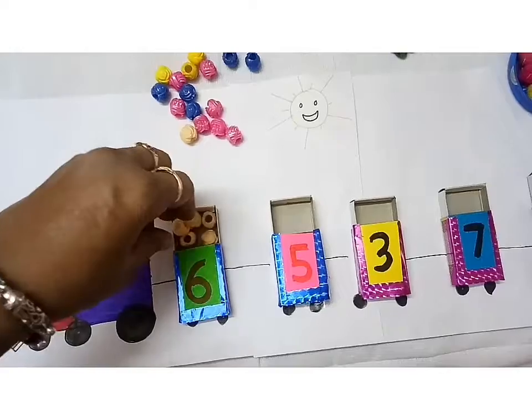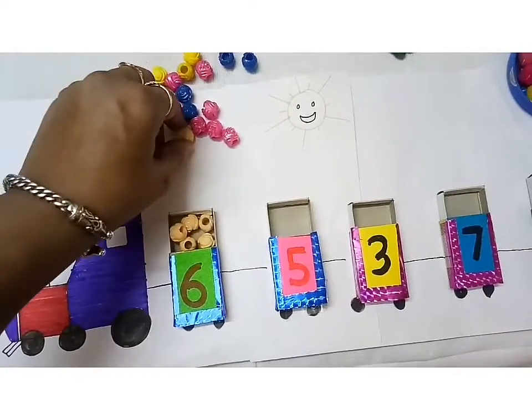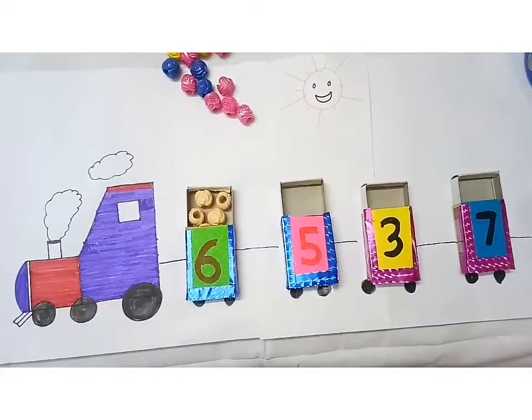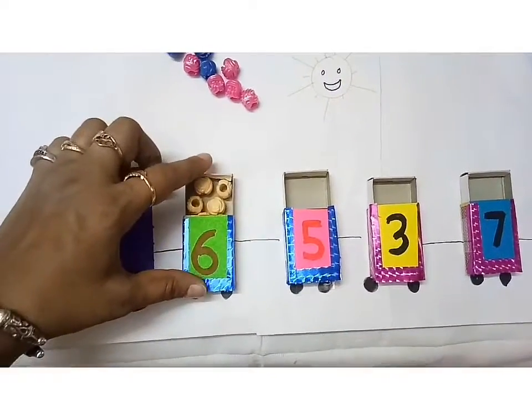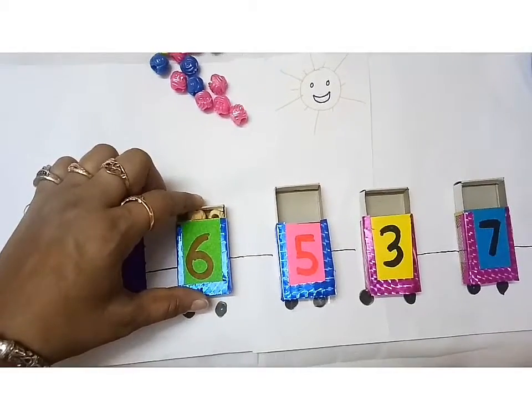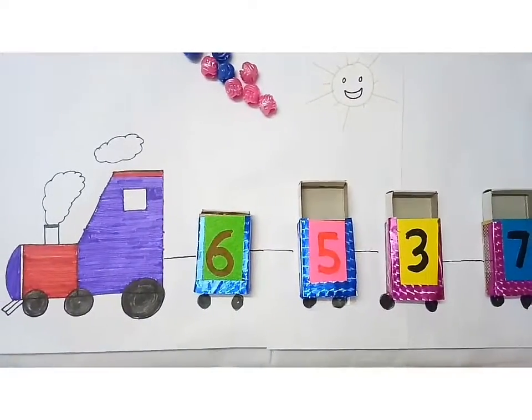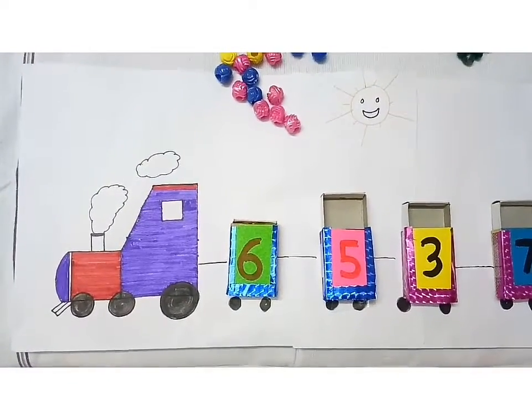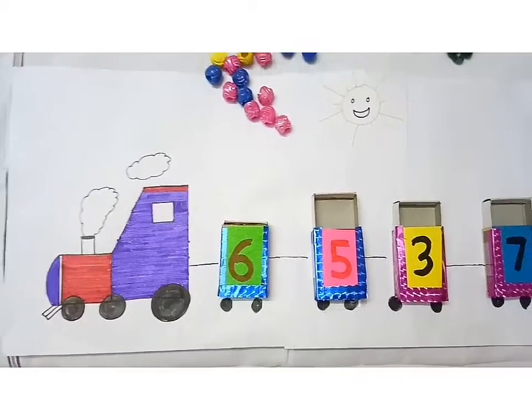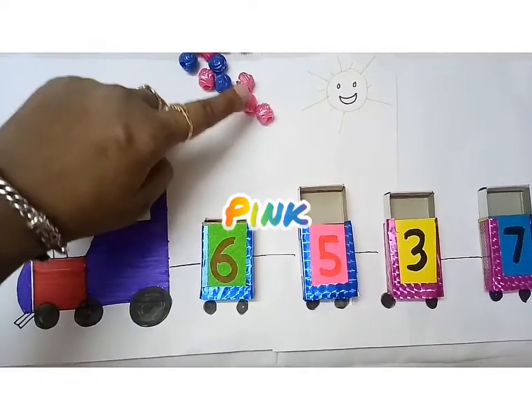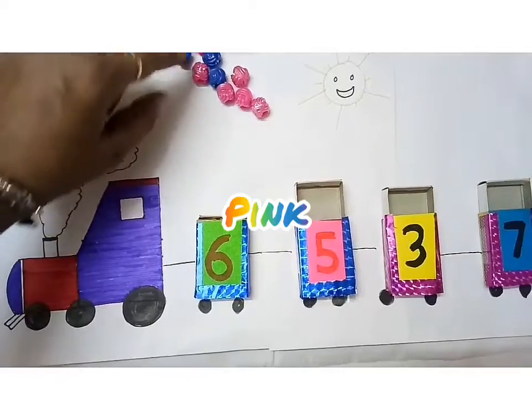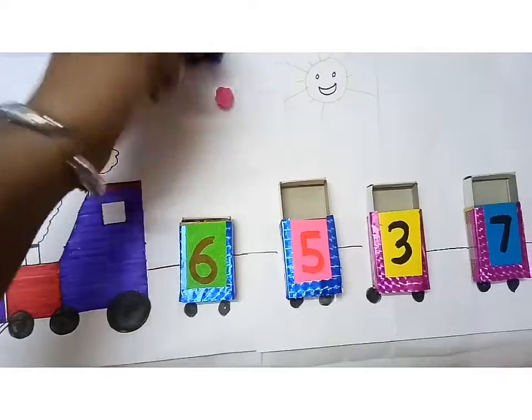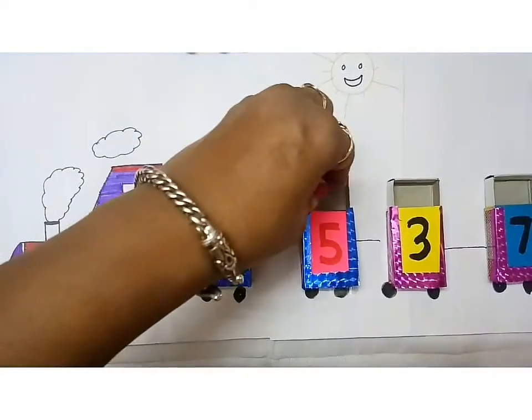Now see, I have placed all the six beads in the box and now I am closing this. Now next is five, so we will count five beads and put them in the box. One, two, three, four, and five. Just put them in the box. So these are all five beads and I have put them in the box.